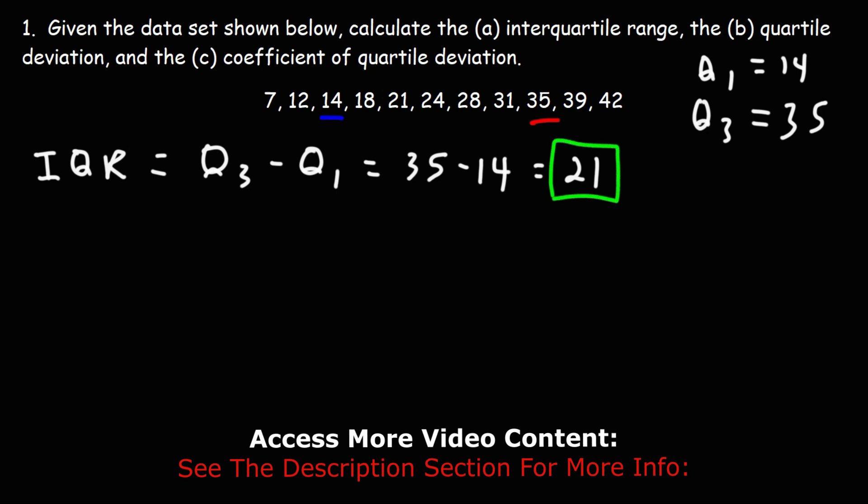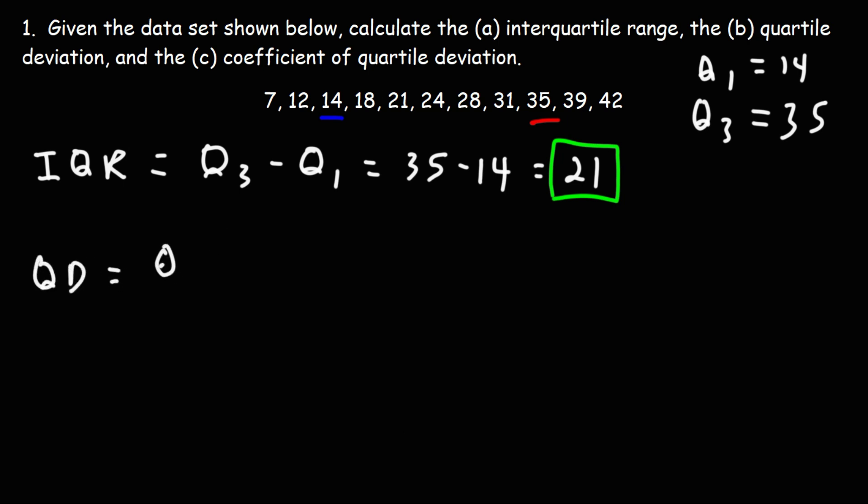Now, part B, the quartile deviation, let's call that QD. The quartile deviation is Q3 minus Q1 divided by 2. In other words, it's one half of the interquartile range.